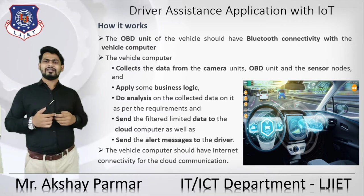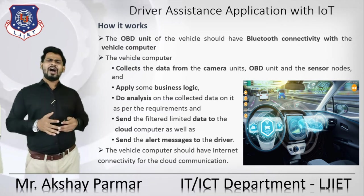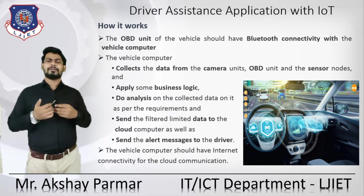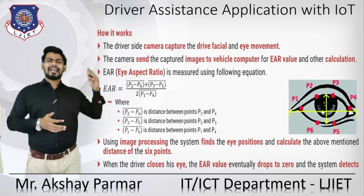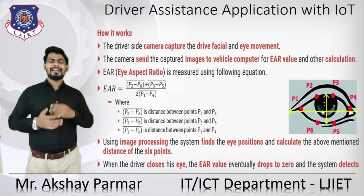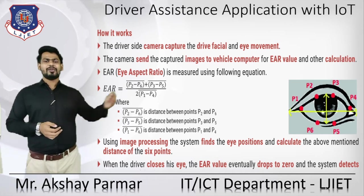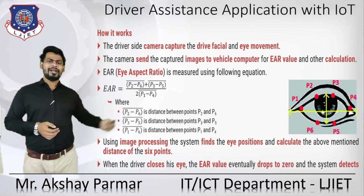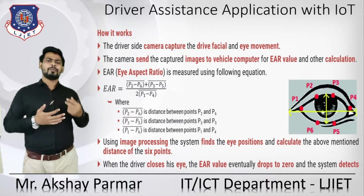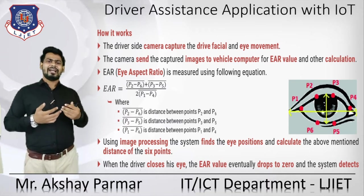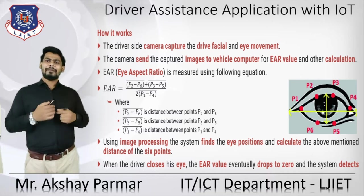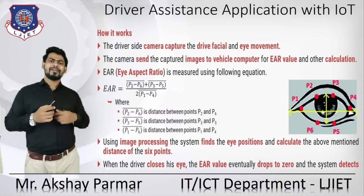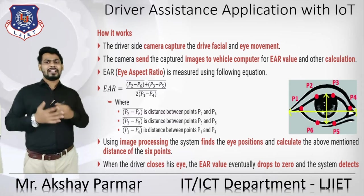You may ask: how does this system detect drowsy eyes for the driver? First, the driver-side camera captures the driver's facial and eye movements. We have different points on the eye — P1, P2, P3, P4, P5, and P6. With the help of these points, we can detect whether the driver has drowsy eyes. The camera sends the captured image to the vehicle computer for EAR value and other calculations.